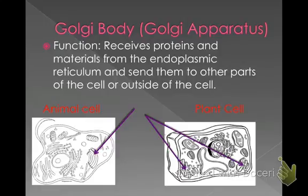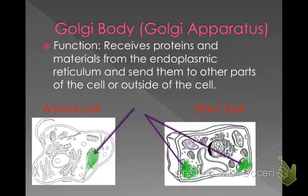The next organelle is called a Golgi body, also known as a Golgi apparatus. This is something not present in protist cells. Here it is in your animal cell and here it is in your plant cell — they serve the same function in both. They receive proteins and materials from the endoplasmic reticulum and send them to other parts of the cell or outside of the cell. Think of it like your mail distribution center — it receives the mail and sends it out to where it needs to go.